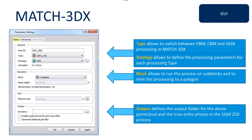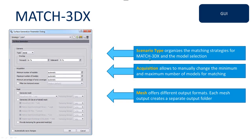We will also cover strategy — how to define parameters for each processing type, how to run on sub-blocks for specific images, and how to configure output. Each processing type, such as feature-based matching or semi-global matching, has its own parameters, which will be explained in detail in the upcoming videos.